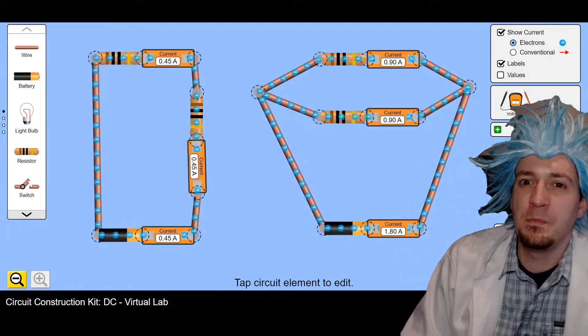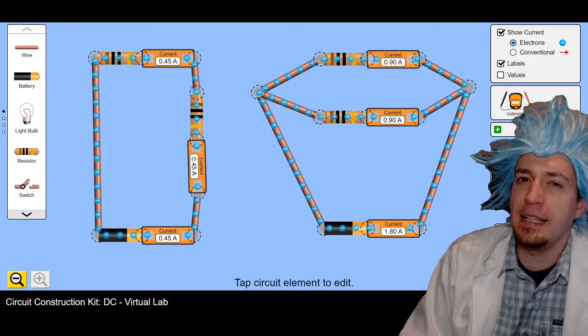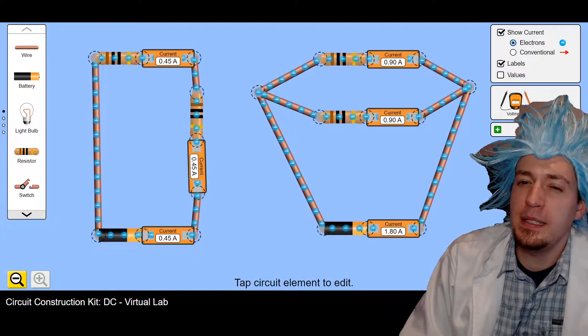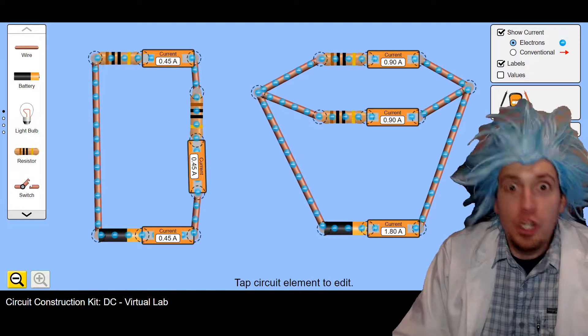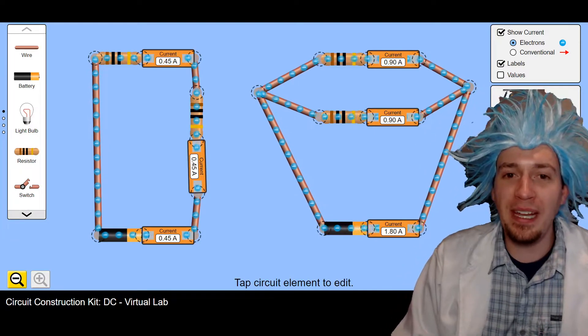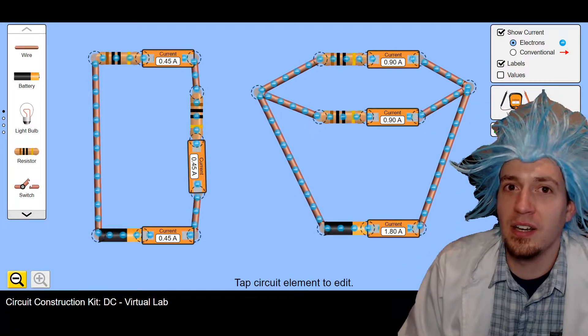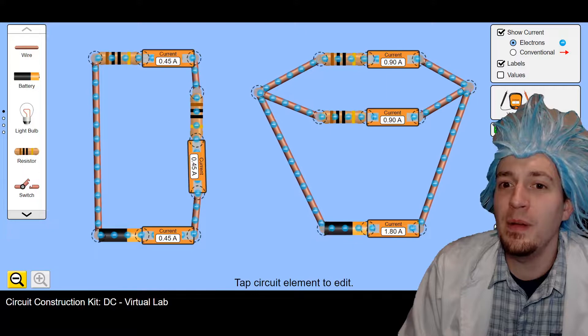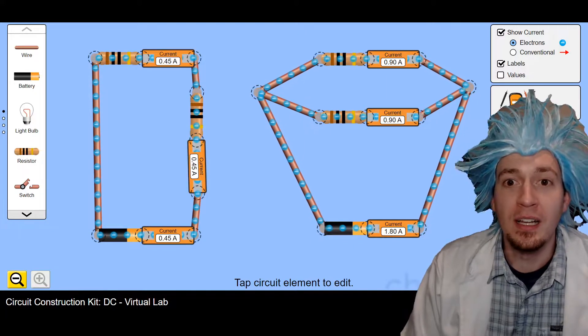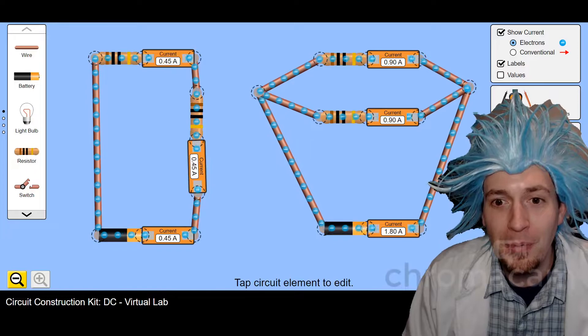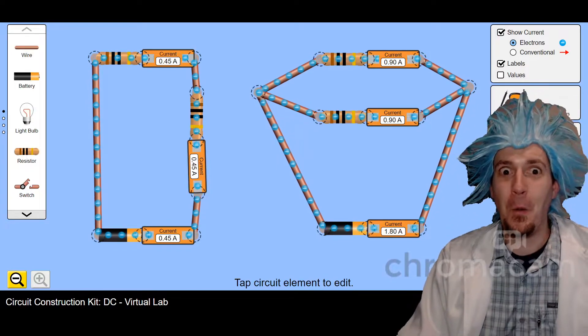But if we see in parallel, 0.9 plus 0.9, could it be? That's right! If we think about some of the electrons are in this top loop, and some of them are in this bottom loop, but all of them are here! If we add these two up, we would get this other one.